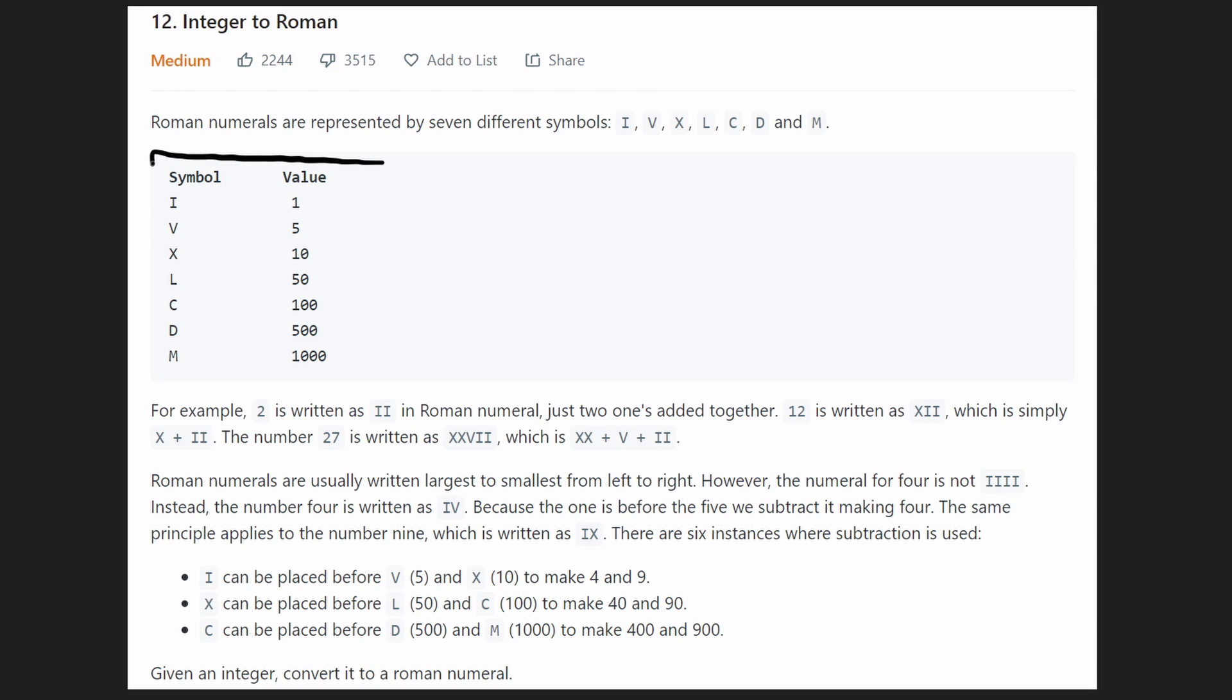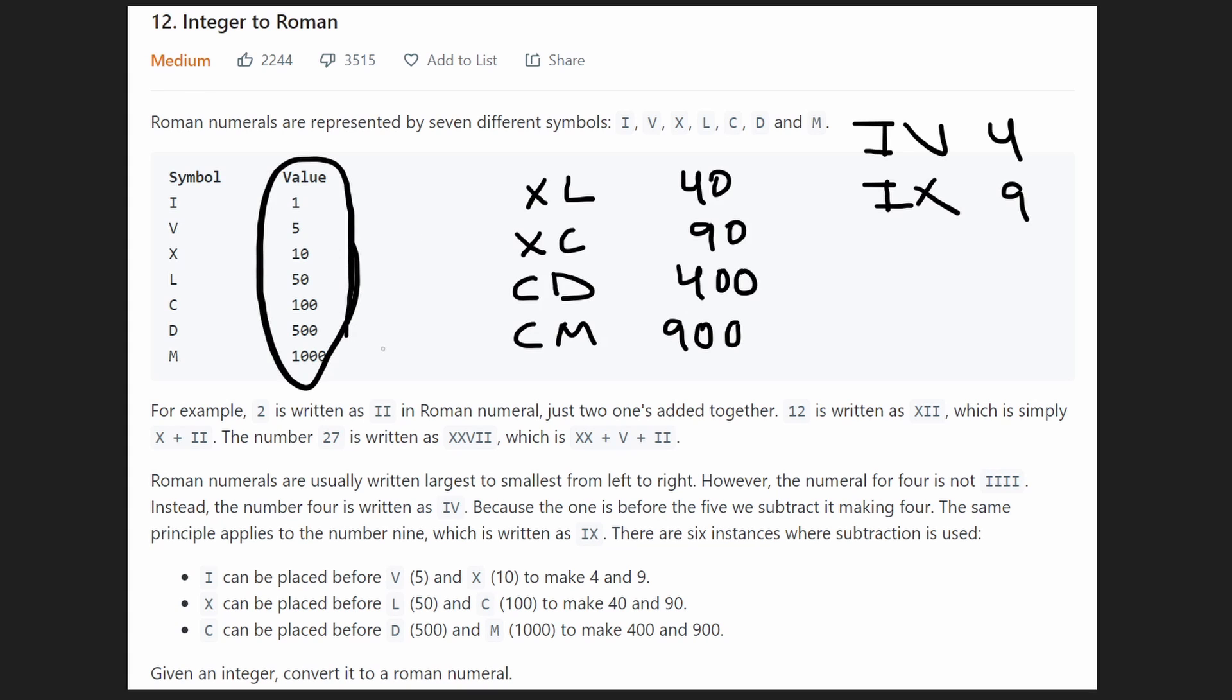Basically, for our purpose of this function, this table is incomplete. Because we have some rules down here that describe to us that CM is 900 and CD is 400. And there's a couple more rules. So IX is 9, IV is 4. And remember how we do need to iterate through these in the correct order, like from largest to smallest. So basically, to this table, we're going to be inserting this 900 in between these two. We're going to take this 400 symbol, insert it between these two, and et cetera. This 90 is going to go in between these two. Because we want to maintain the order, we want to iterate through them largest to smallest.